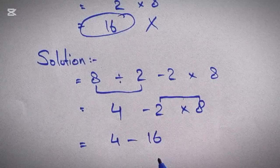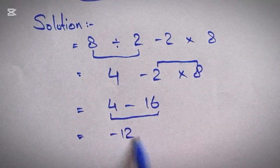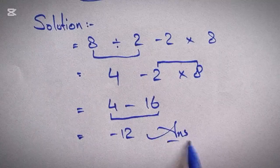Here, 8 times 2 equals 16. So we're left with 4 minus 16. Now 4 minus 16 equals negative 12.